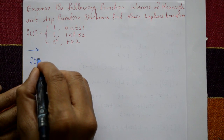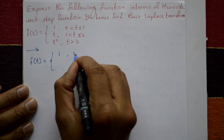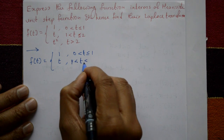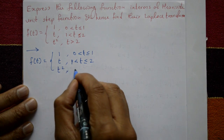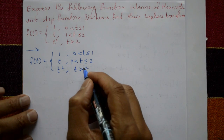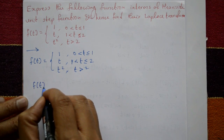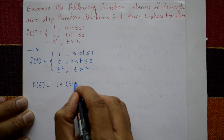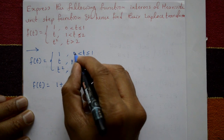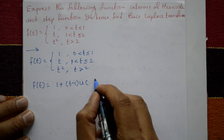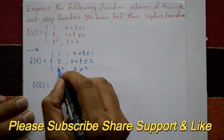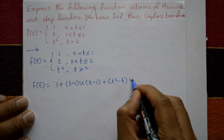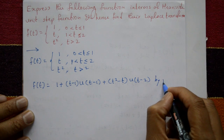Given f(t) = 1 for 0 < t ≤ 1, t for 1 < t ≤ 2, and t² for t > 2. We express f(t) using unit step functions as: f(t) = 1 + (t − 1)·u(t − 1) + (t² − t)·u(t − 2), using the unit step function property.